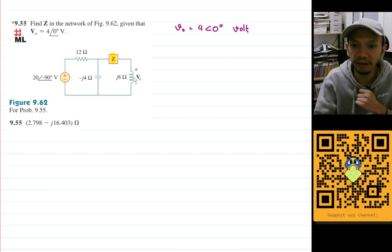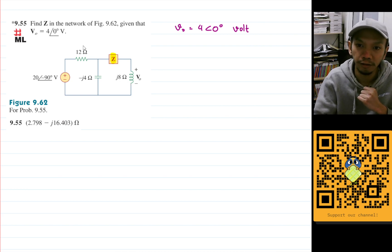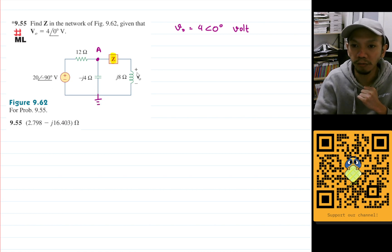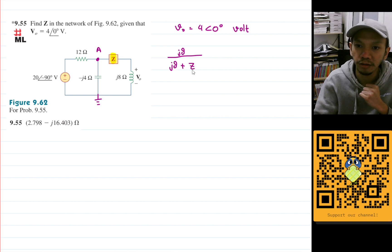To find V0, we can use a voltage divider. The voltage divider is relative to this node here — let's name this as node A — and the ground here. To calculate V0, we can do j8 divided by (j8 plus Z), and that will be multiplied by Va.